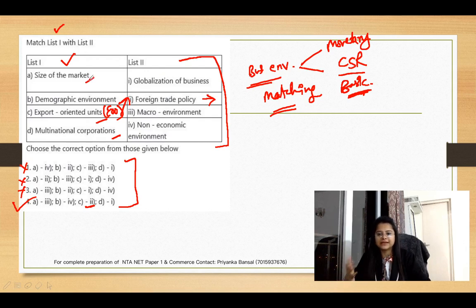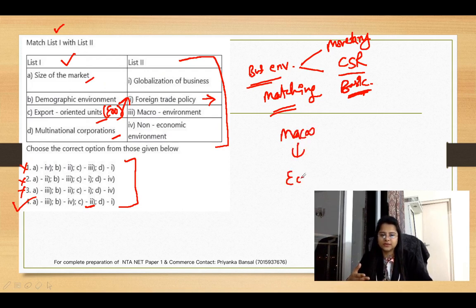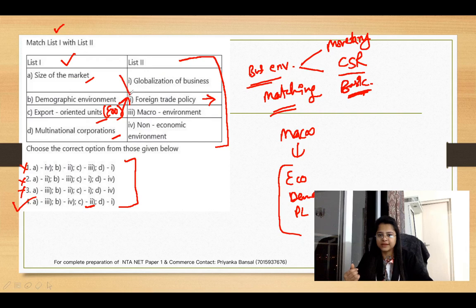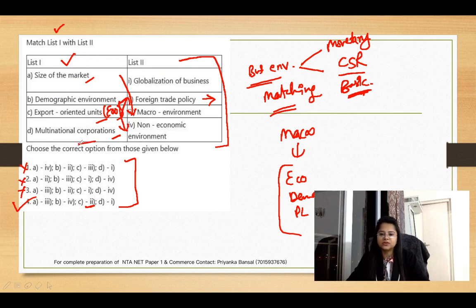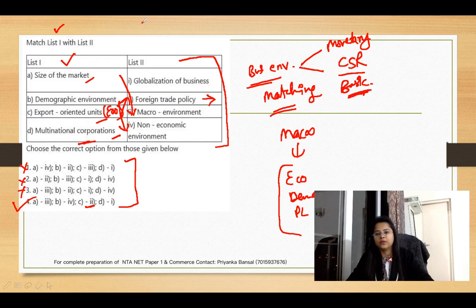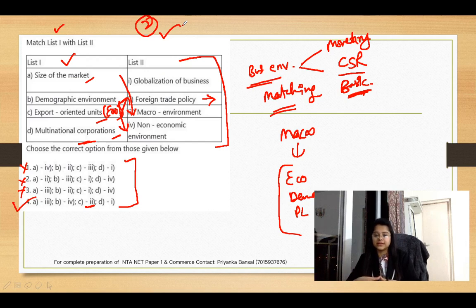When I match C, my options get eliminated and I get the right answer - the trick is to eliminate options. Size of the market - what is the macro environment? Parts of the macro environment include economic environment, demographic, political, legal, and social culture. So size of the market will match with the macro environment. Demographic will match with the non-economic environment. And multinational corporations will match with globalization of business. So we have to match accordingly.